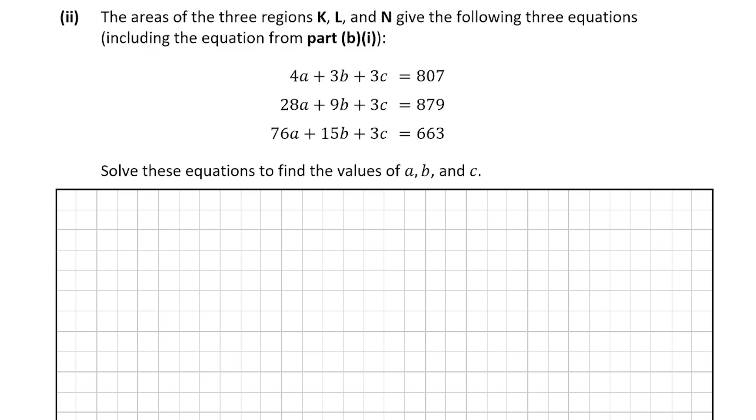So what I'm going to do first is I'm going to label all of my equations. So this is going to be number 1, 2, 3. We're also going to find 4 and 5. So we're going to find 4 by equating 1 and 2. So 1 is 4A + 3B + 3C = 807. Now we want to get rid of a term between 1 and 2. I'm going to get rid of the C term because it's the easiest. So I'm just going to change the sign of 2.